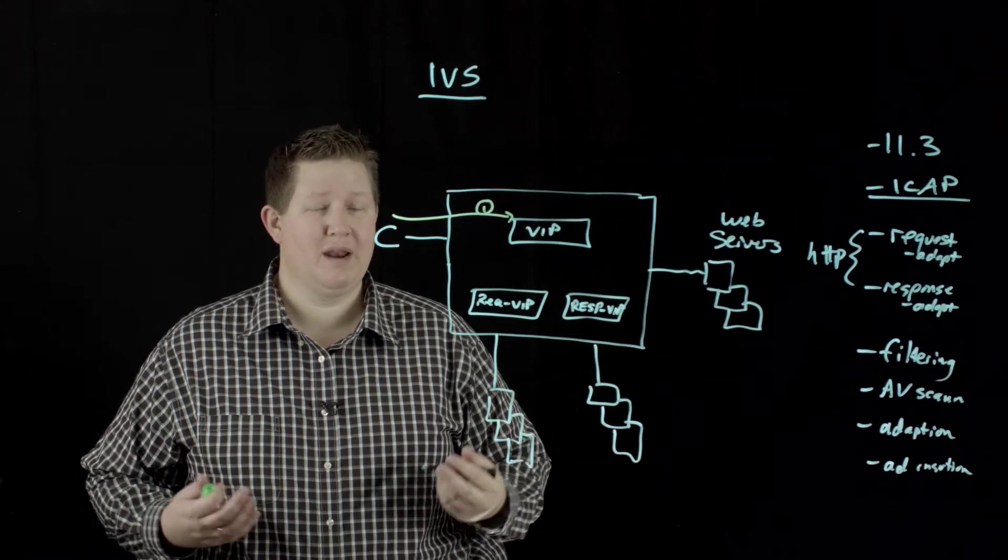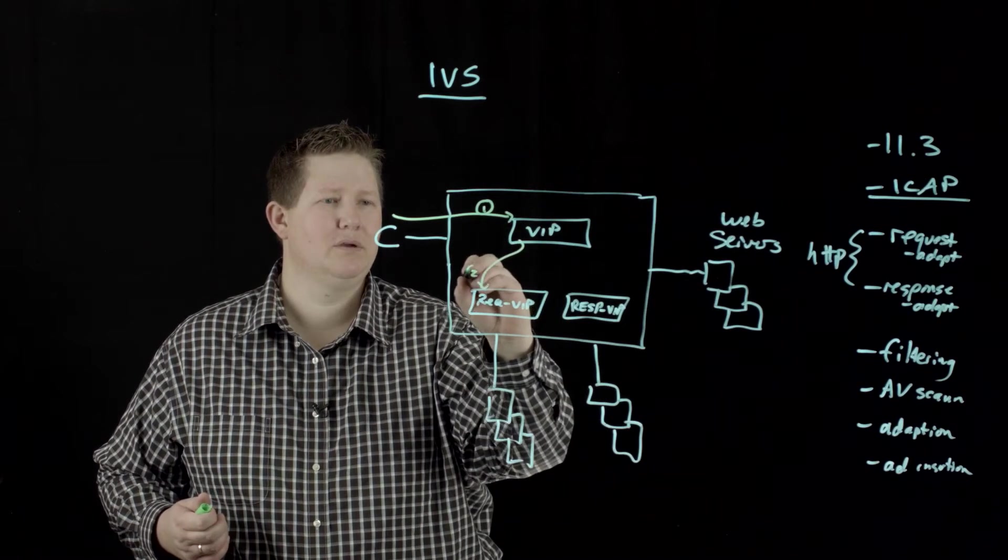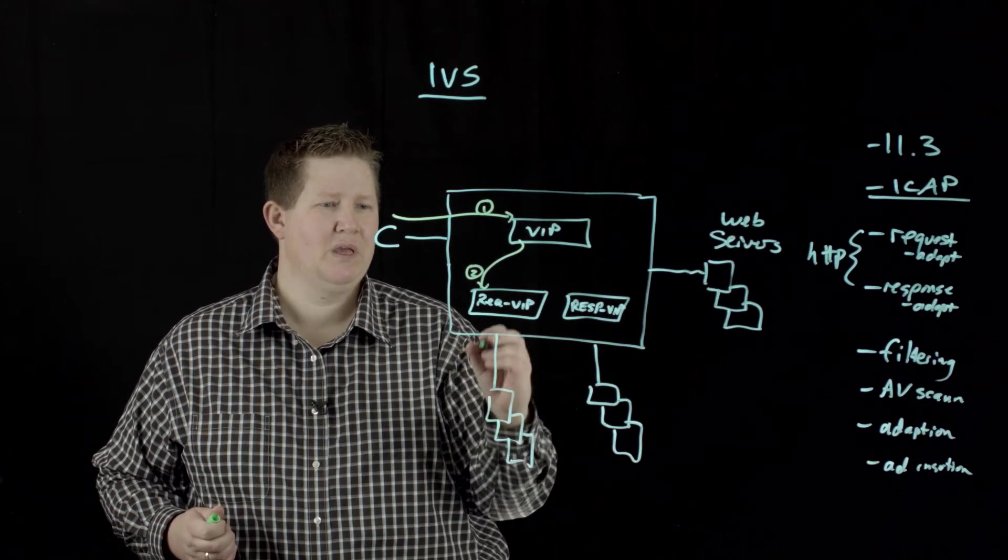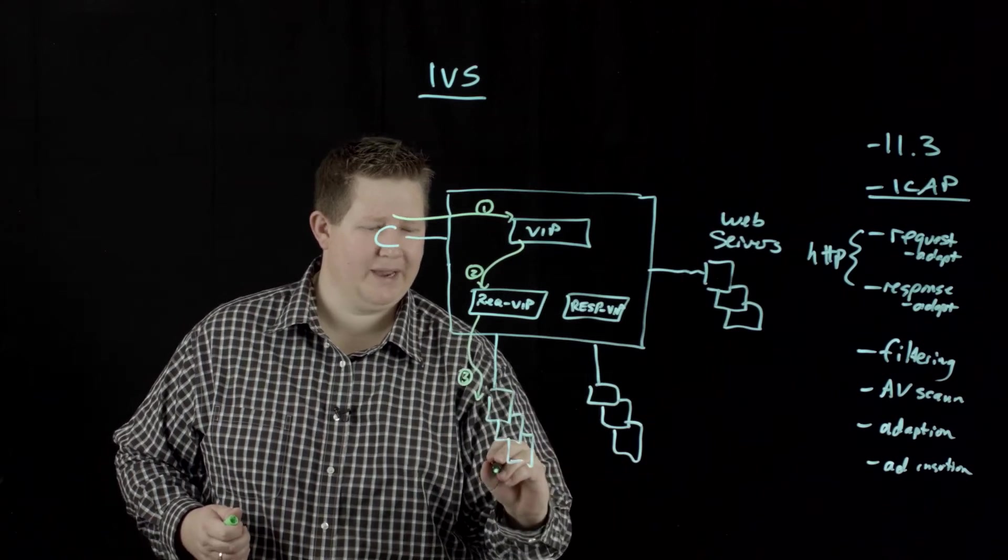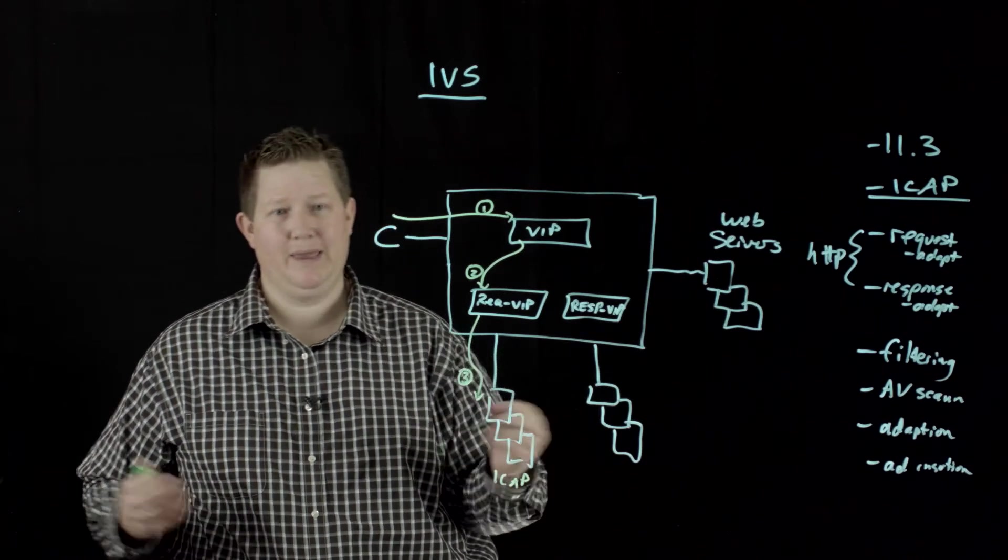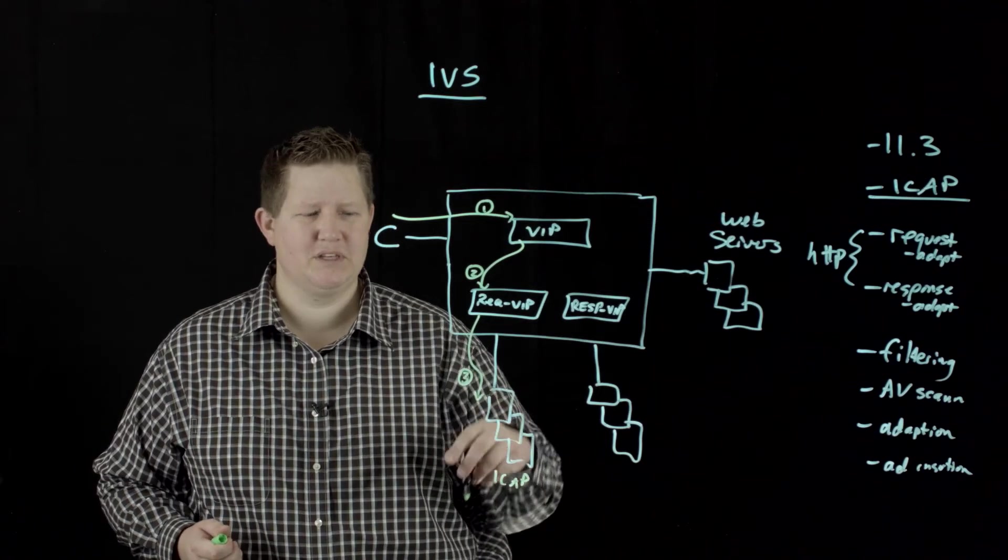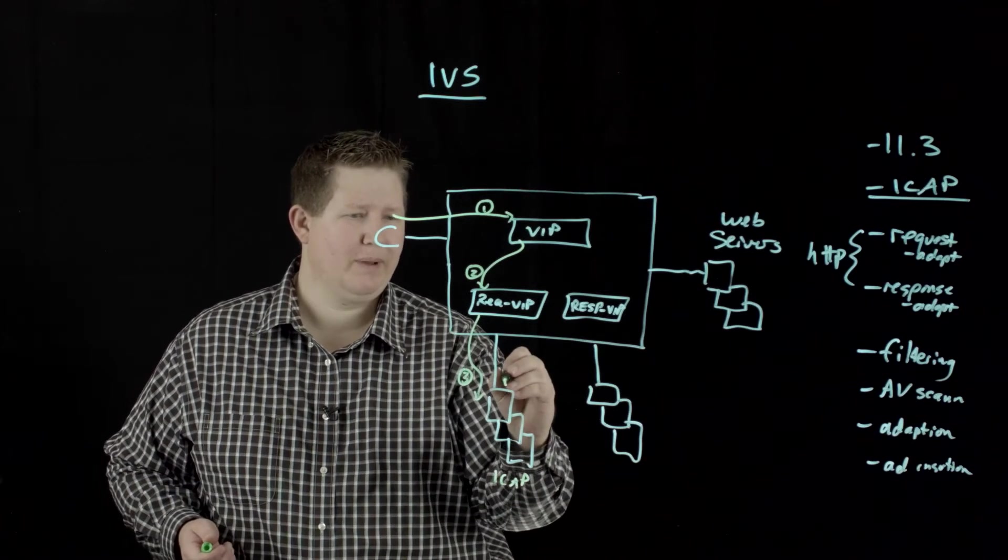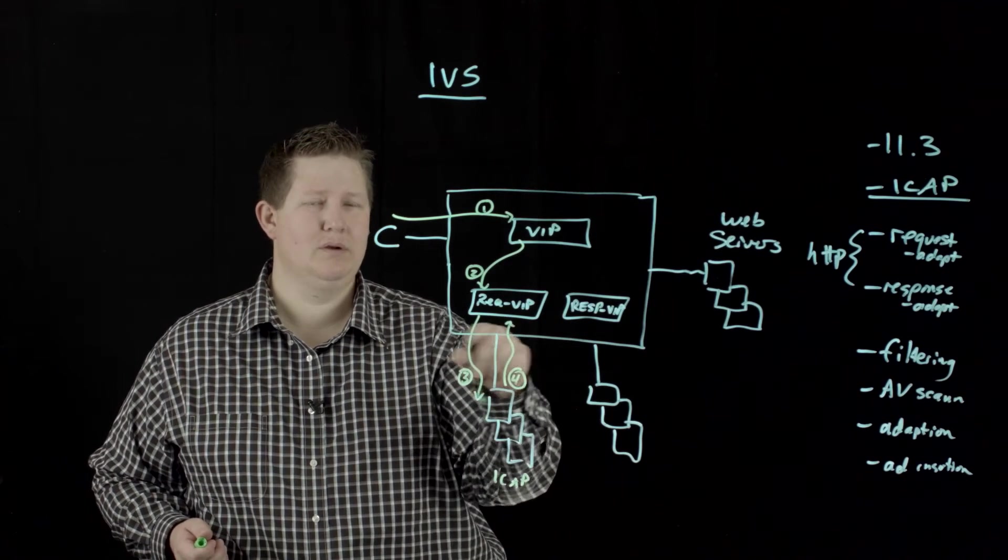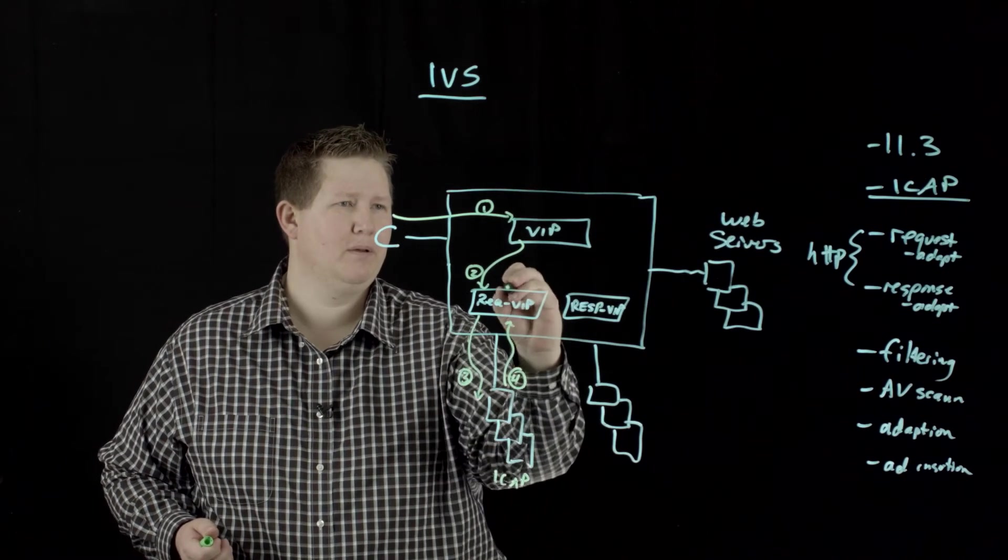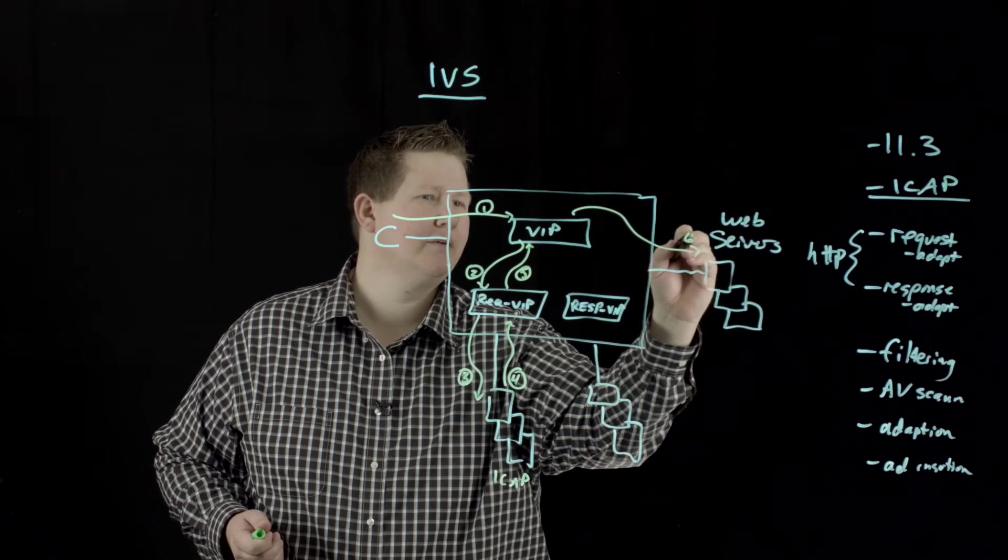But if there's some kind of match and you want to send it off to your internal virtual server, that comes down here to this virtual server, and then it hands off to these ICAP servers. Again, it doesn't have to be ICAP, but we'll say these are ICAP servers. It's going to do some scanning and say it's okay. We're going to pass that request on through. That comes back up to the request VIP, which then comes back up to your primary VIP, and then hands back off to your web servers.